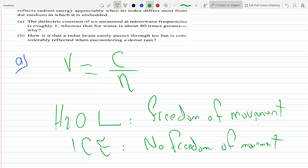For part (b), it asks how is it that a radar beam easily passes through ice but is considerably reflected when encountering dense rain? Considering what we said in part (a), why are things here kind of the other way around?